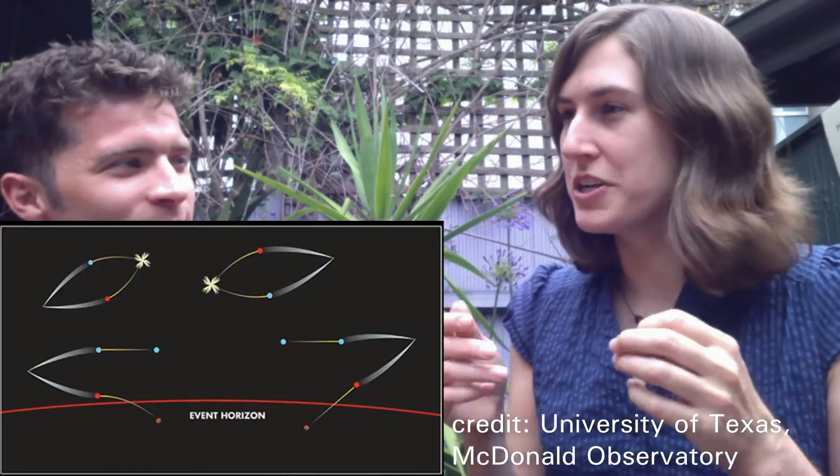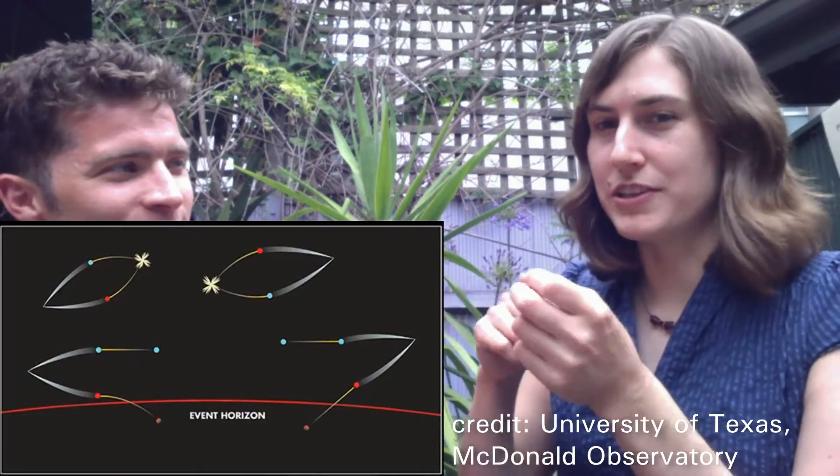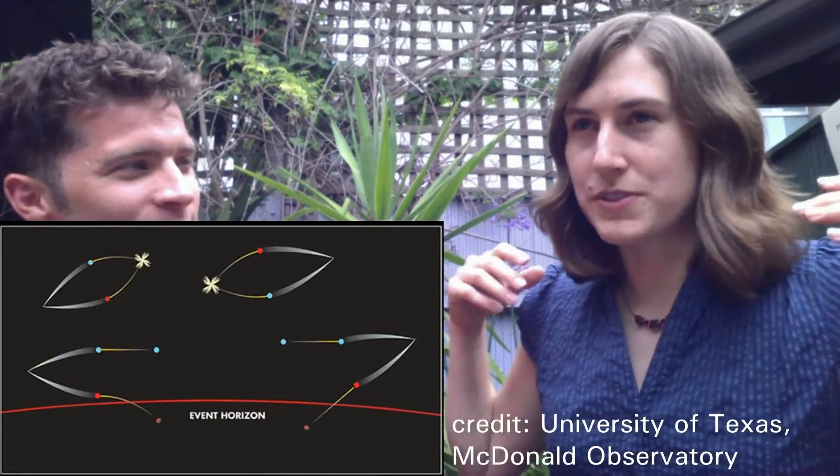These little black holes would evaporate — Hawking Evaporation is this process by which tiny black holes can sort of lose their mass. They put out radiation. Nothing can leave the black hole, but there's this quantum mechanical process by which particles are sort of created, and some fall in and some come out. The ones that come out carry away the mass of the black hole, and then the black hole evaporates.